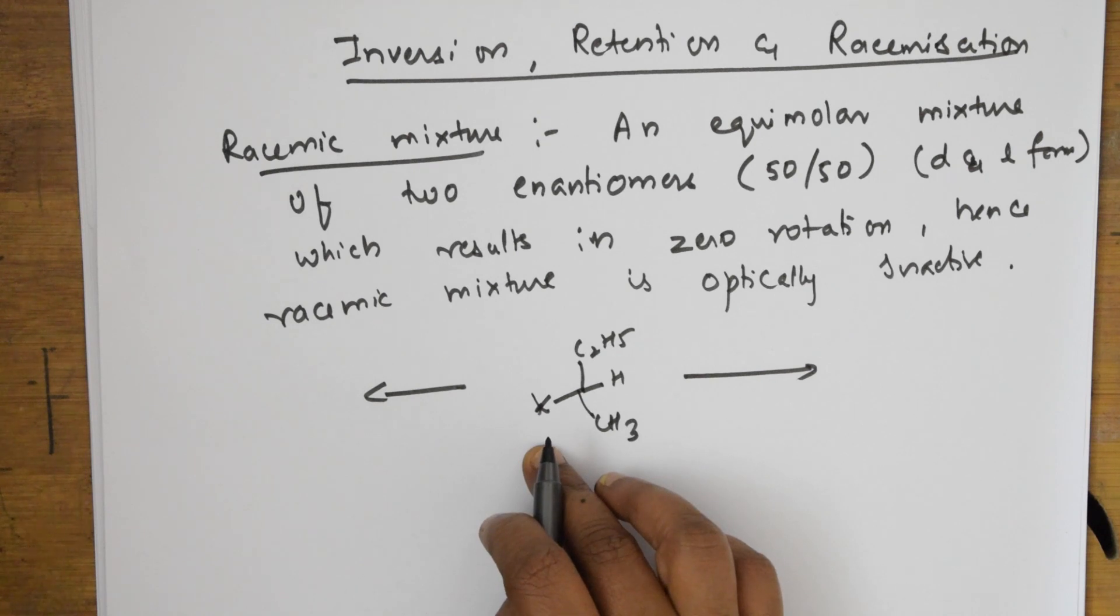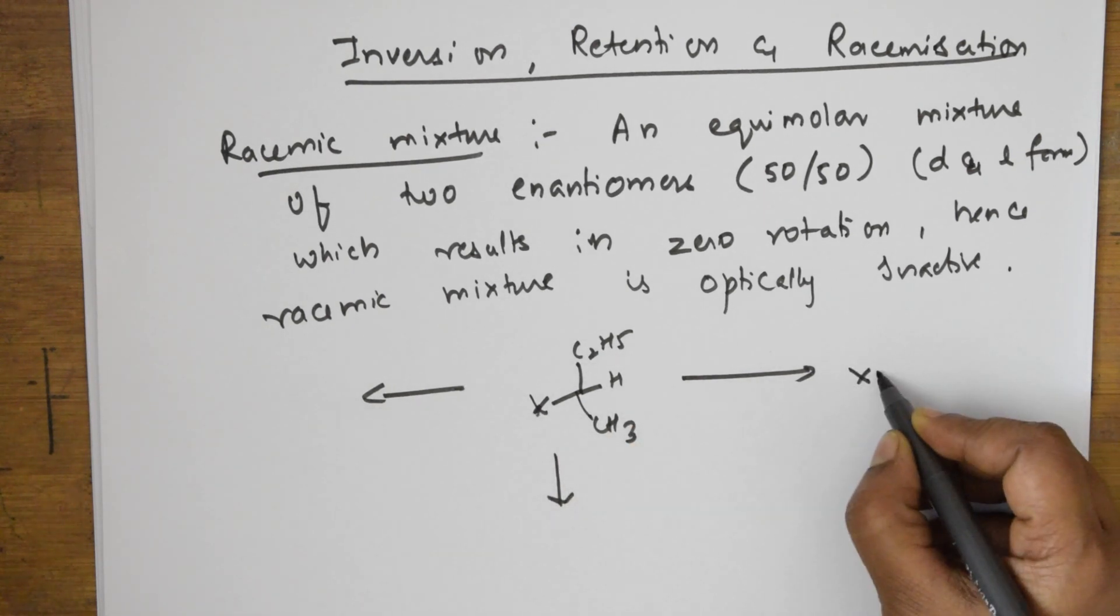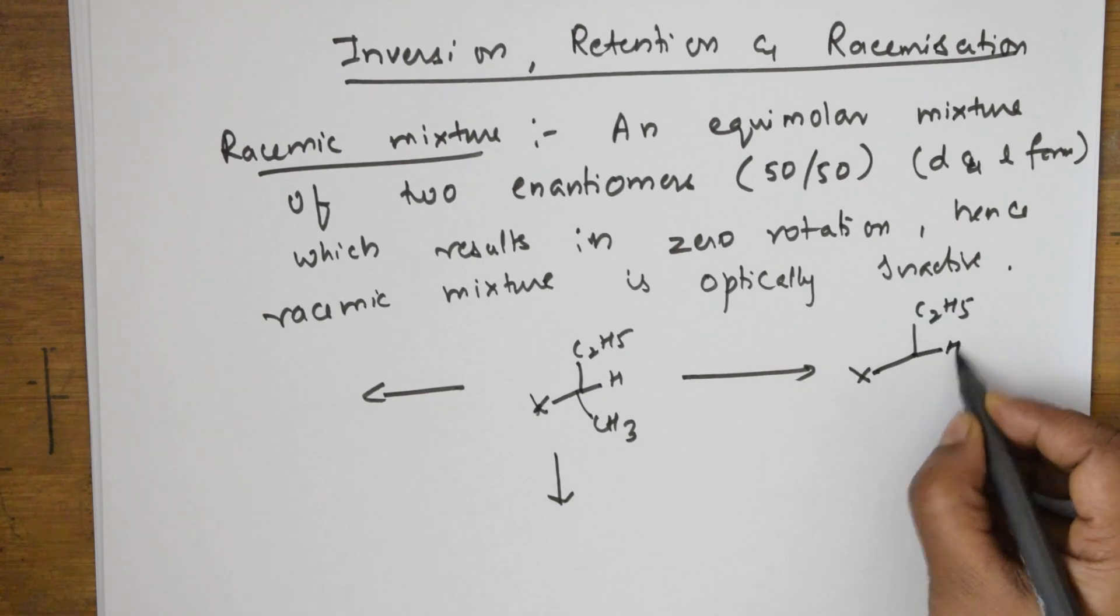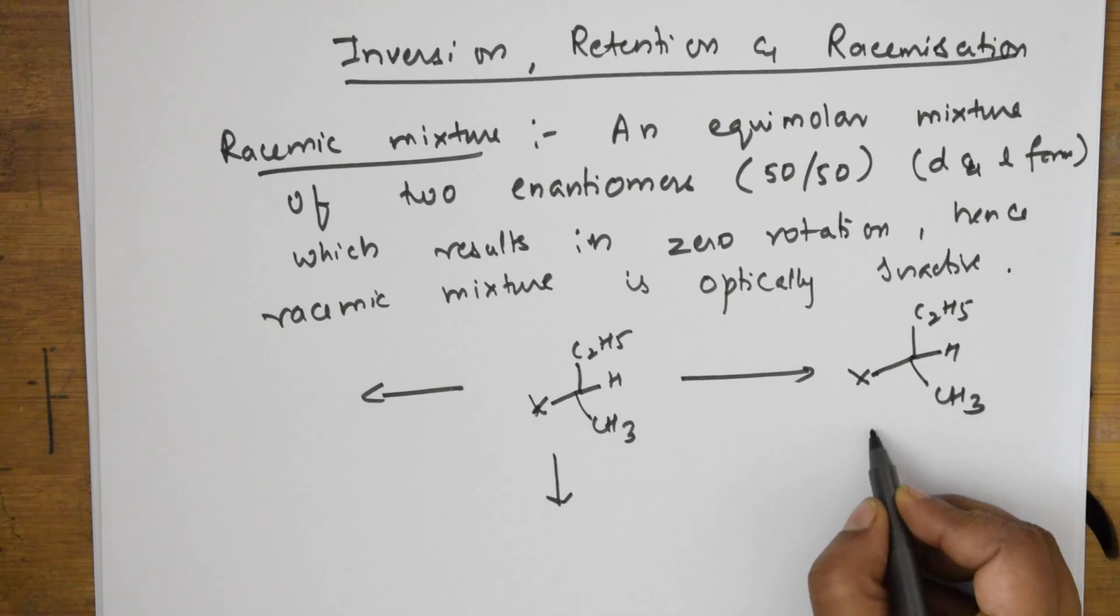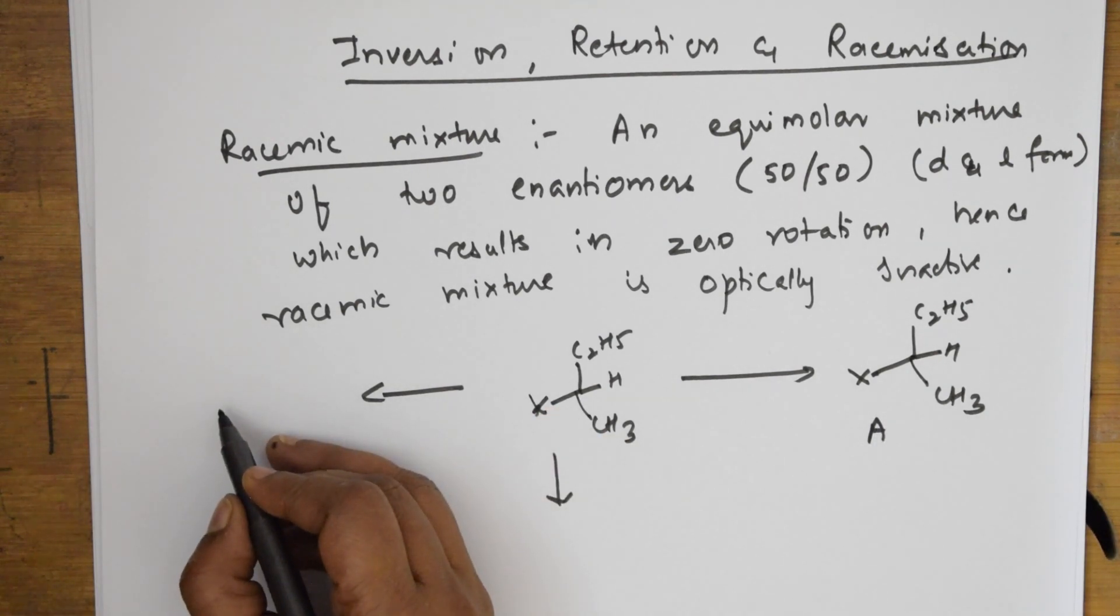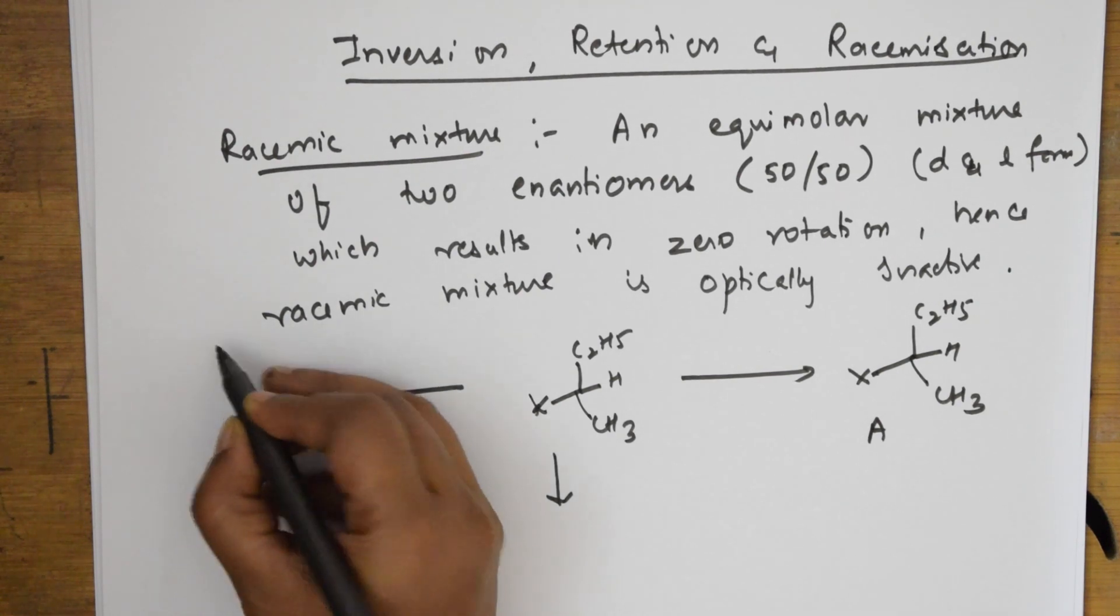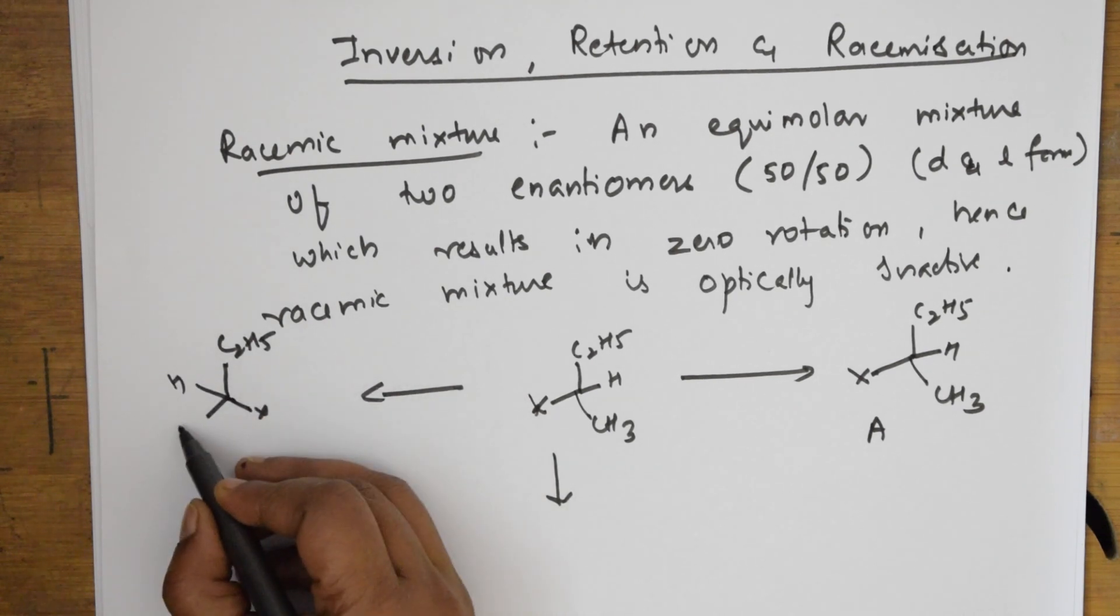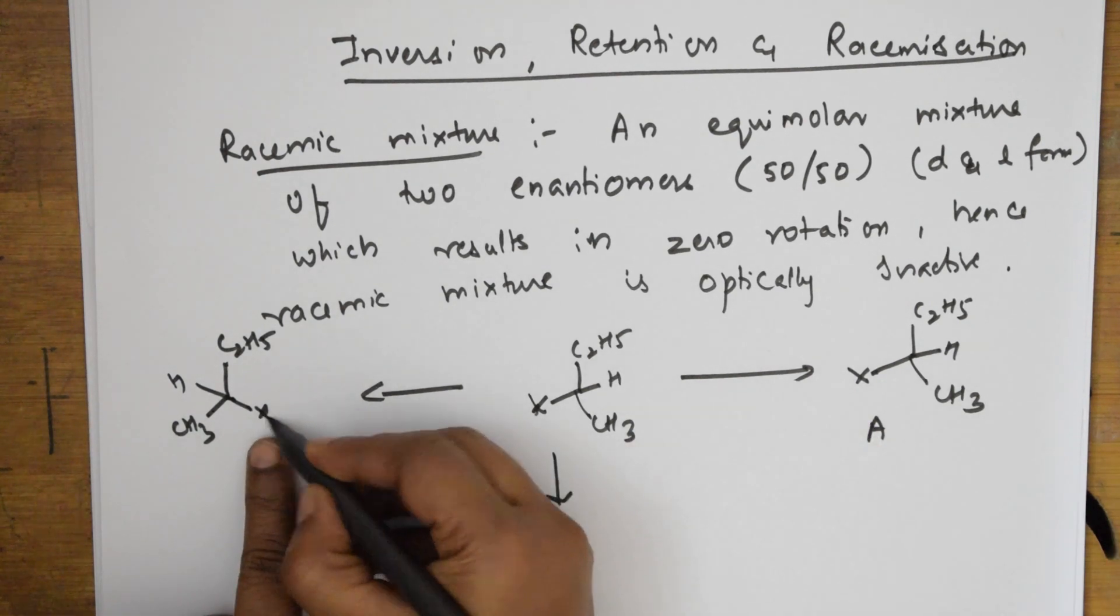Suppose this particular molecule, if it shows the configuration written like this, let us name this as A. The configuration of this molecule after rotation, if I write C2H5, H, CH3, this is B.